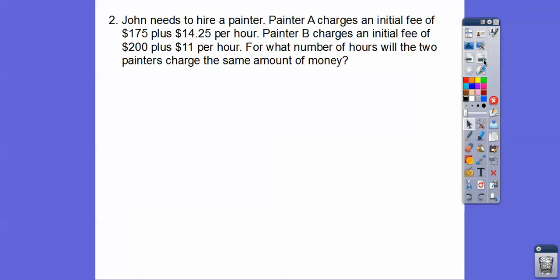Okay, so this is stuff that you're more familiar with, solving equations. Let's try it with this one. This was in the last lesson also. John needs to hire a painter. Painter A charges an initial fee of $175 plus $14.25 per hour. Painter B charges an initial fee of $200 plus $11 per hour. For what number of hours will the two painters charge the same amount? So there's our two equations right there. Initial fee plus that much an hour for each.